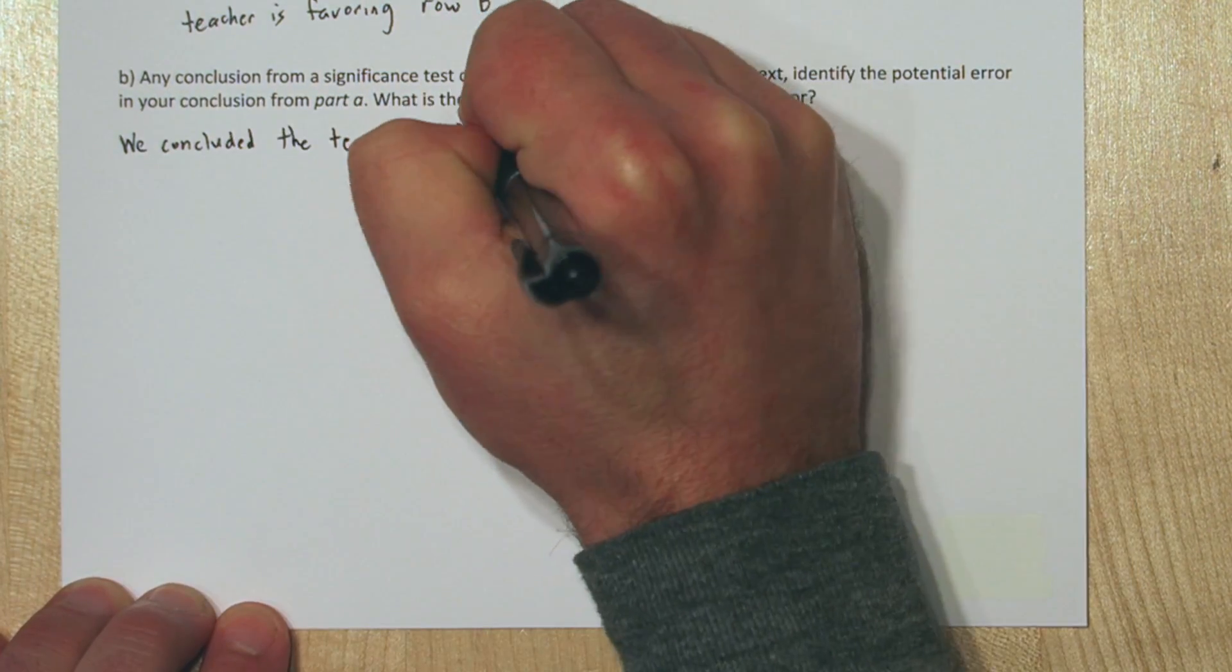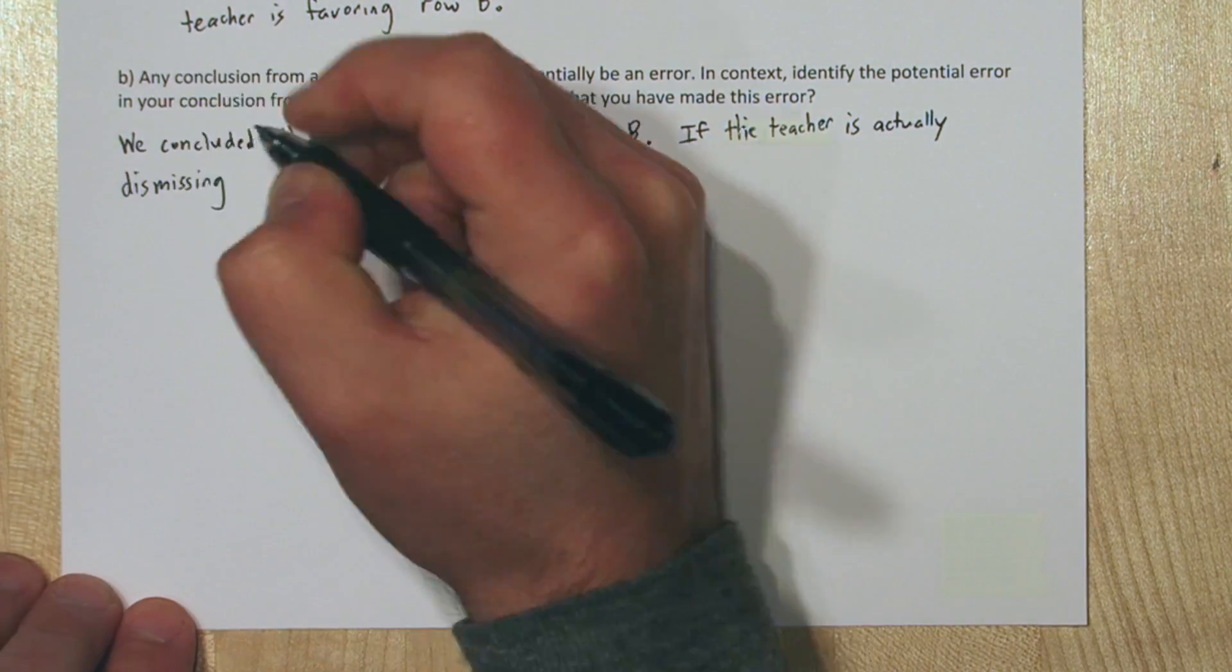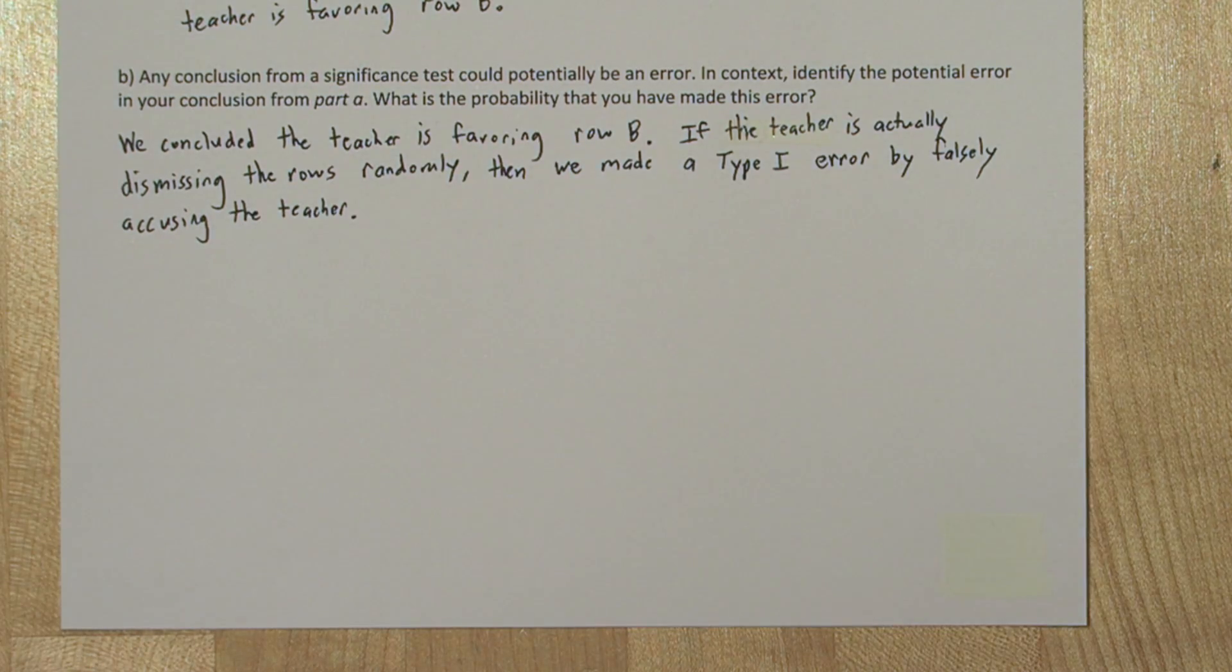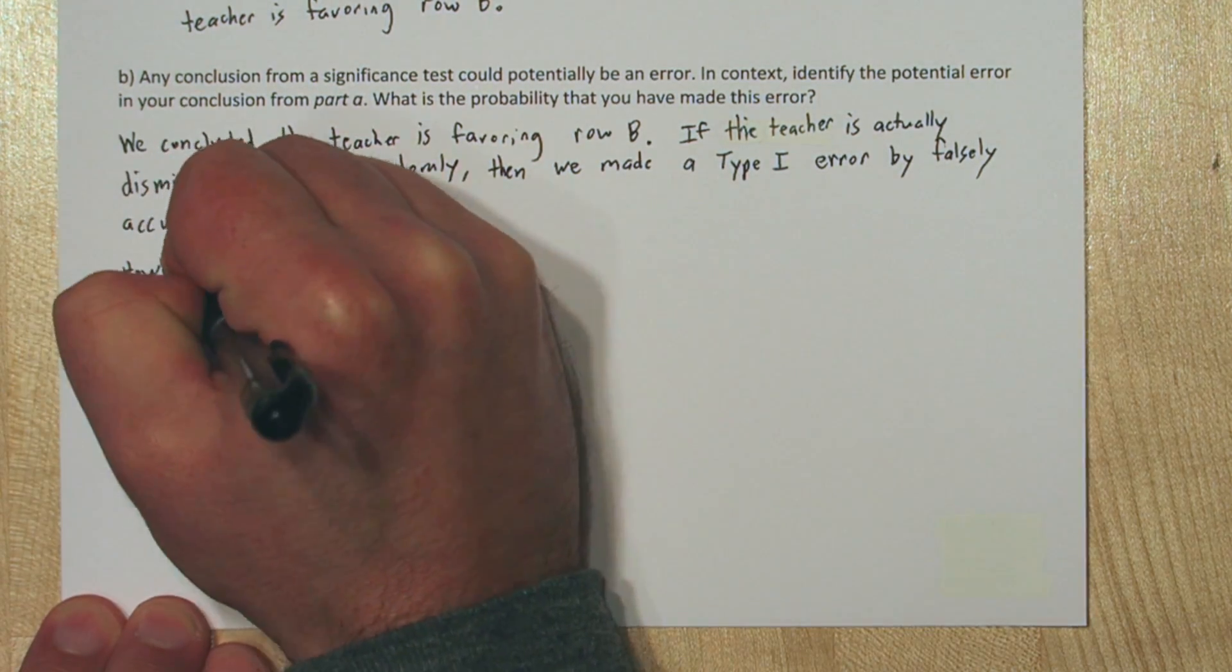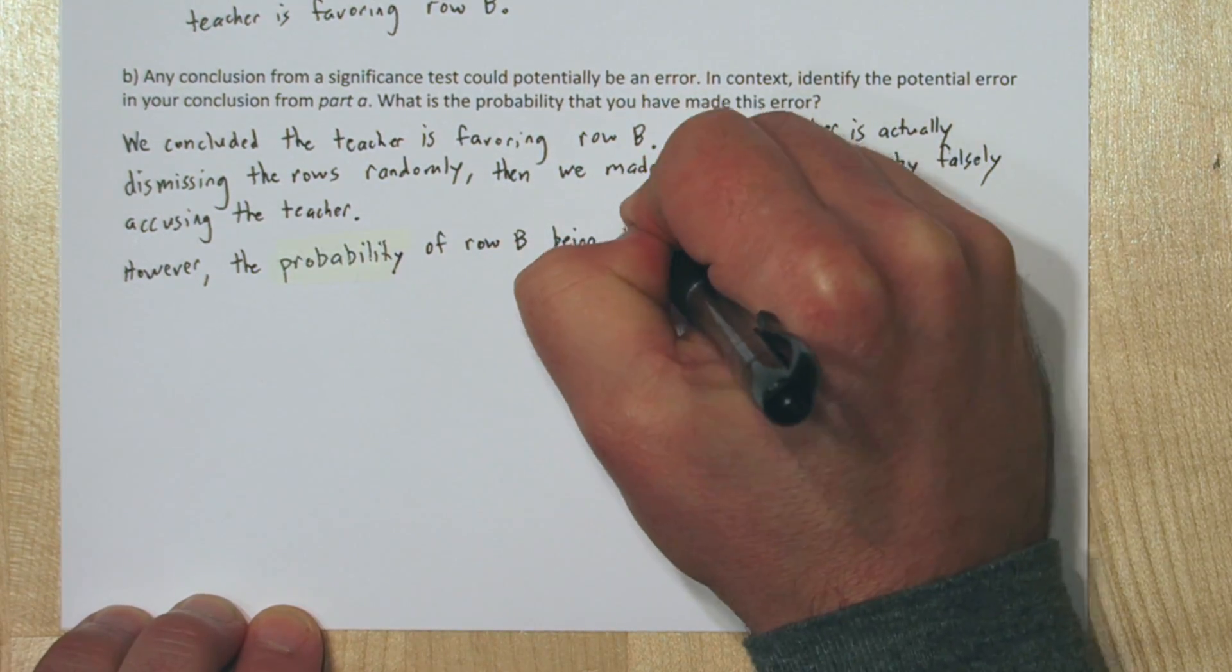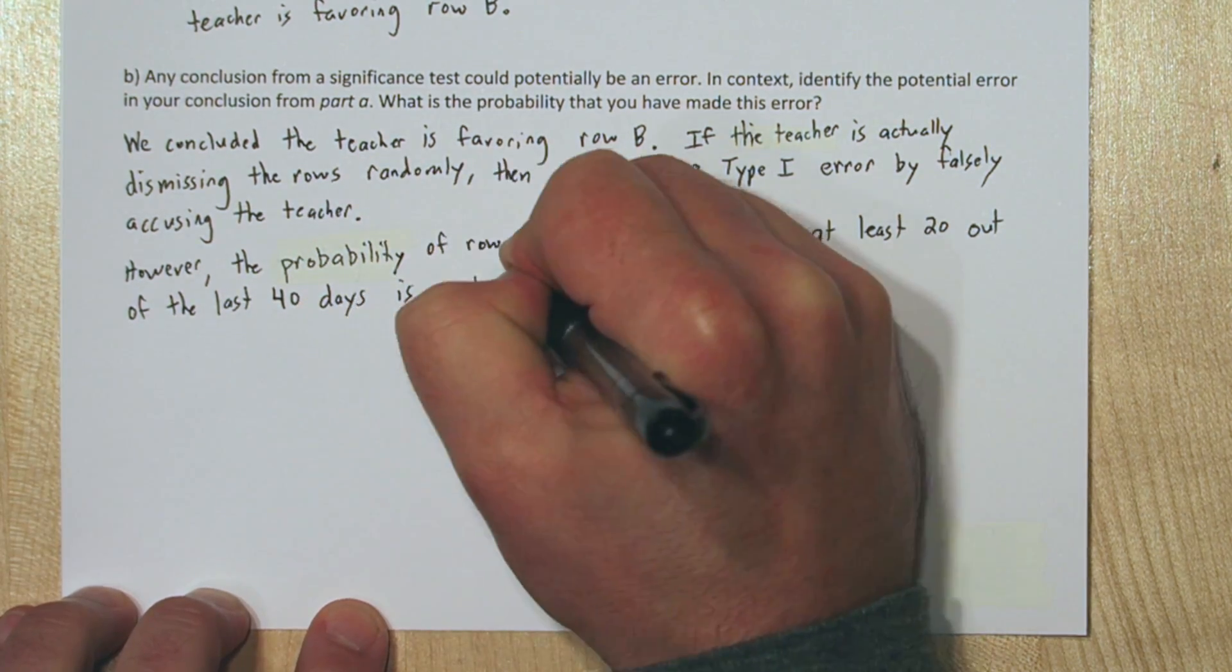So we concluded the teacher is favoring row B. If the teacher is actually dismissing the rows randomly, then we made a type 1 error by falsely accusing the teacher. However, the probability of row B being dismissed first at least 20 out of the last 40 days is only about 0.00013, our p-value.